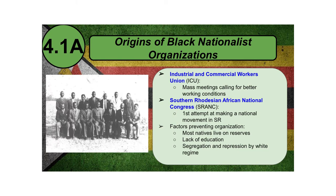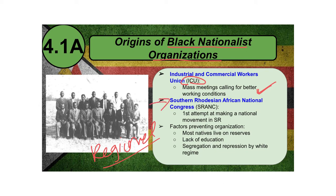With all of this oppression on the black population, this led to the rise of black nationalist organizations. The first is the ICU — Industrial and Commercial Workers Union — which held mass meetings calling for better working conditions, protesting the forced displacement of black people to reserves and then to cities. However, this was all regional. The first real attempt at a national movement was the creation of S-RANC, the Southern Rhodesian African National Congress.